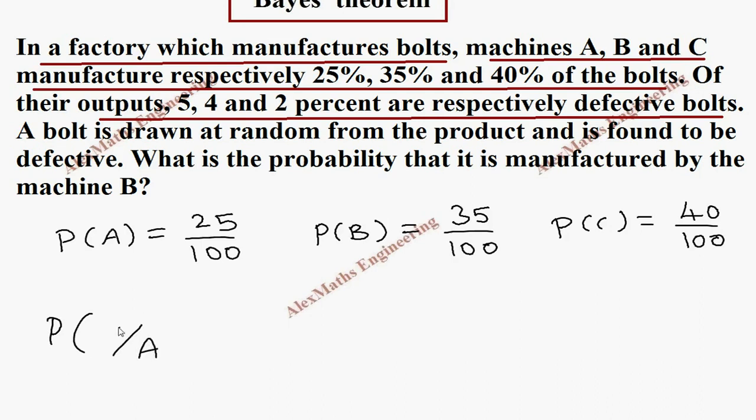So, what we know already, we have written the denominator and what probability is given, we have written the numerator. So, in machine A, the defective is 5%, so 5 by 100.